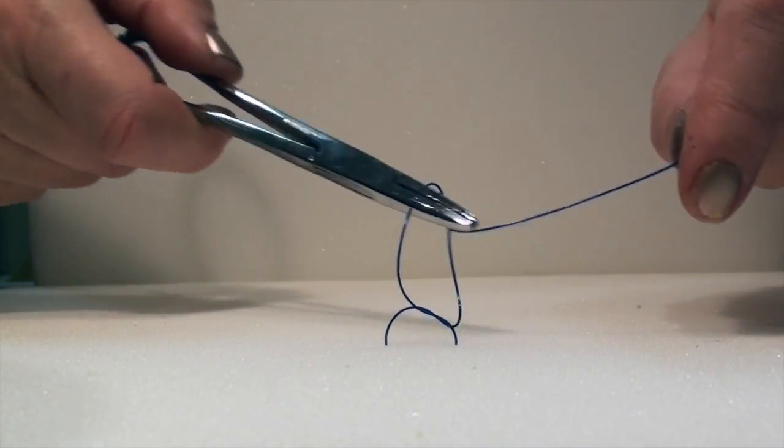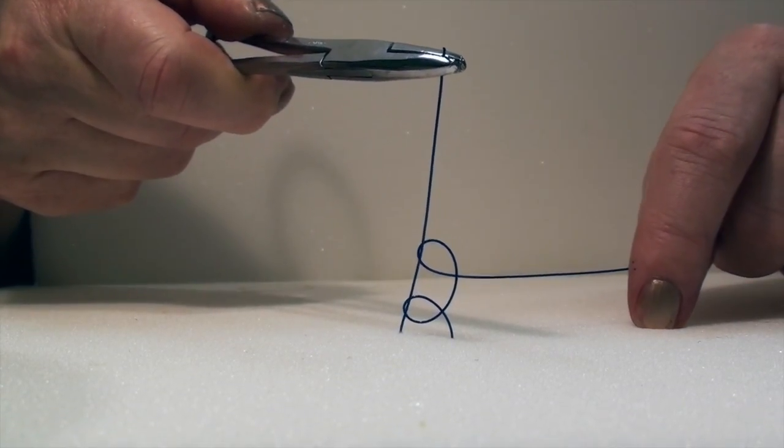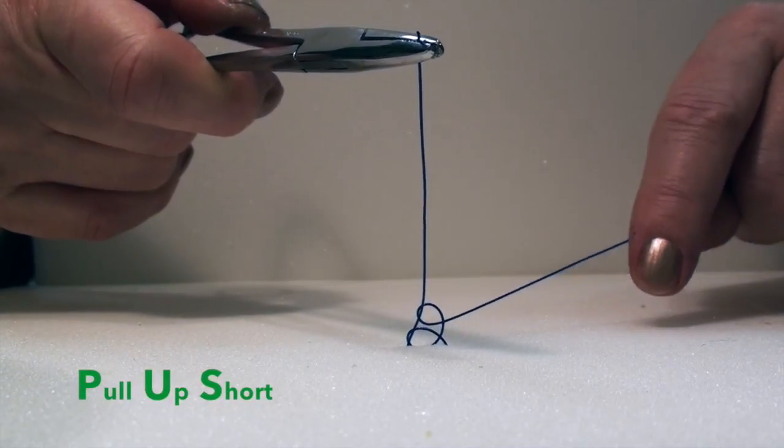simply pull up on the short end of the second throw, rather than taking it back to its original side. The more you pull on that short end, the tighter your knot becomes.